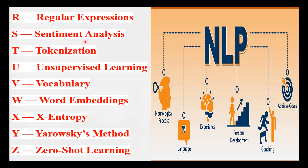T is for Tokenization — breaking text into smaller units such as words or characters. Imagine cutting a book into individual pages for easier handling.